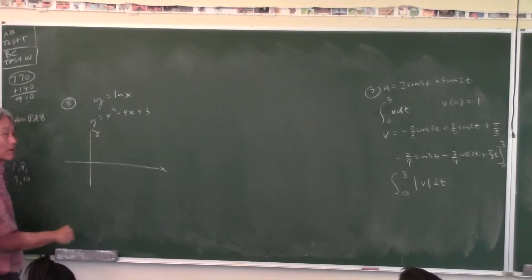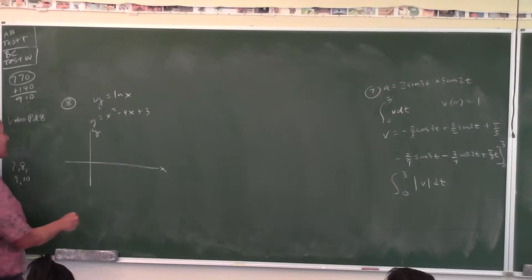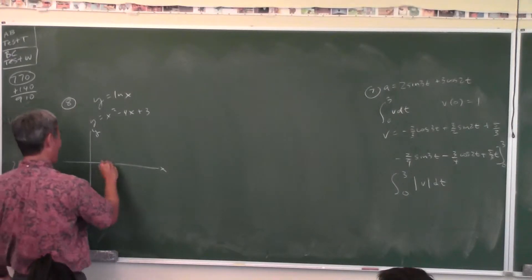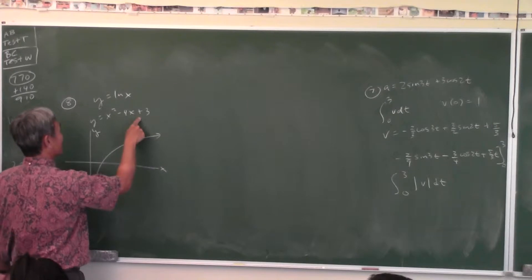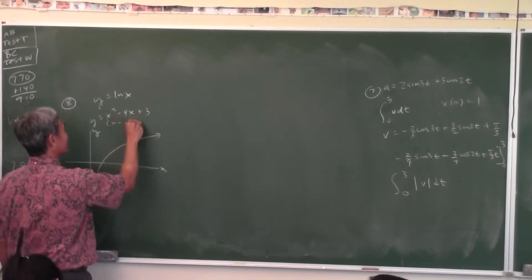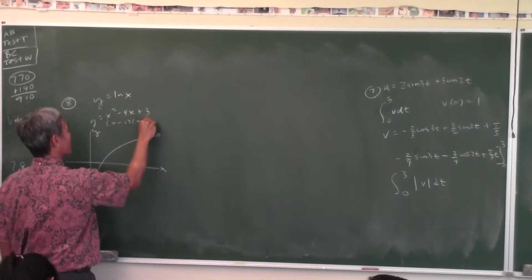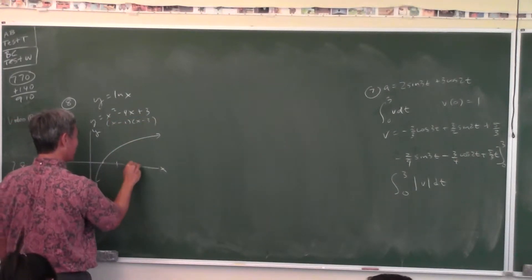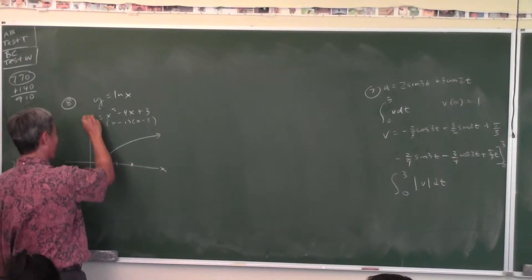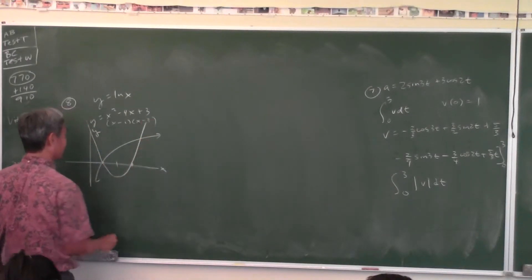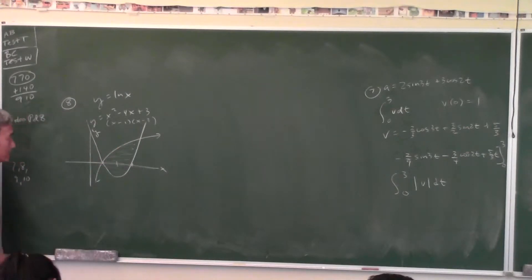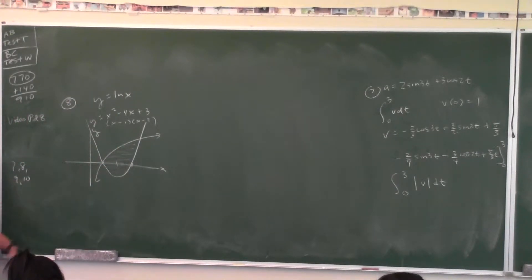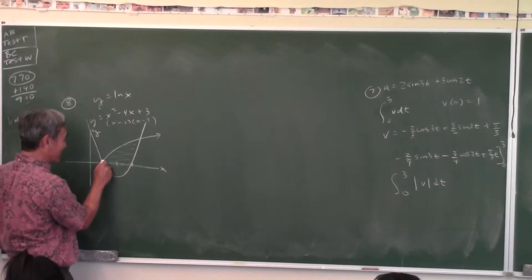You get to use a calculator on this problem, so just graph it. y equals natural log x looks like this. This is a parabola — if you factor it, the x-intercepts are 1 and 3, and it's a parabola opening upward. So here is the region. How do I compute the area of this region? You've got to find where they intersect.